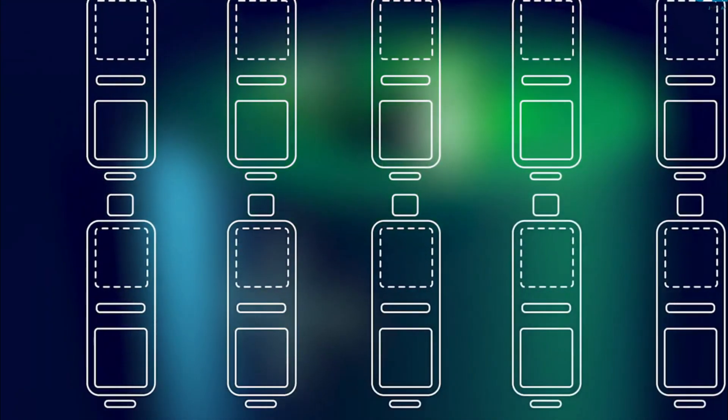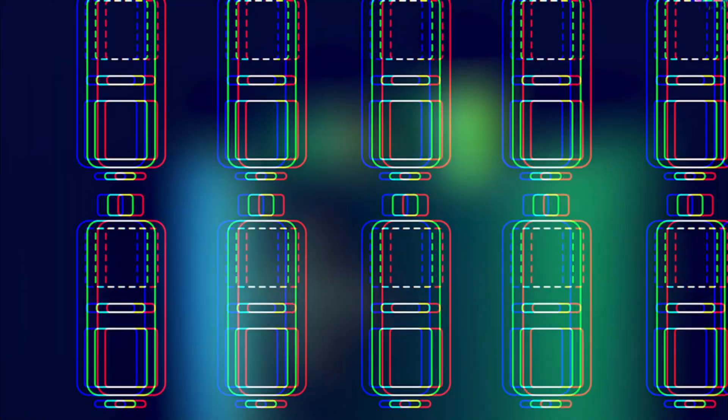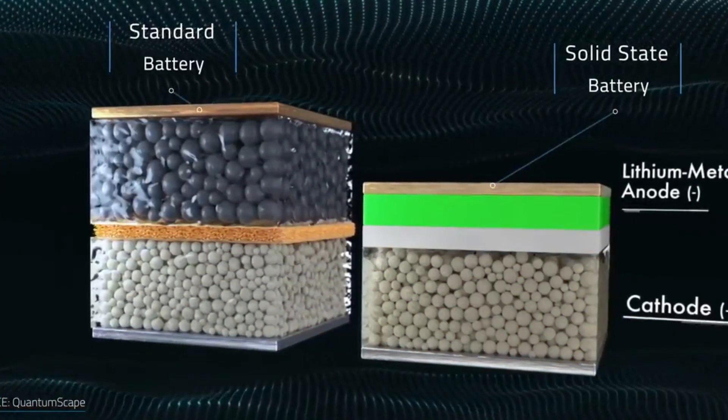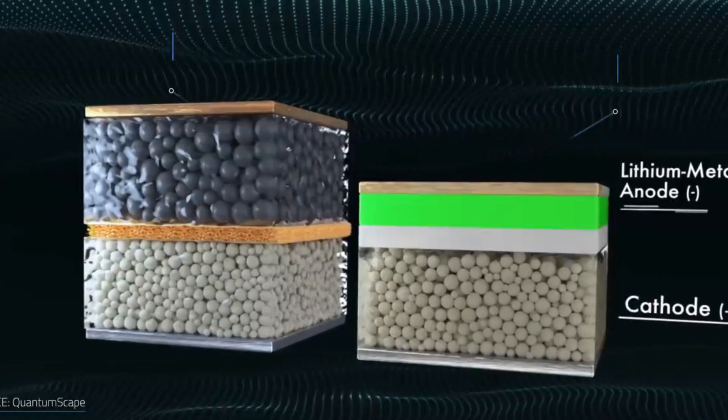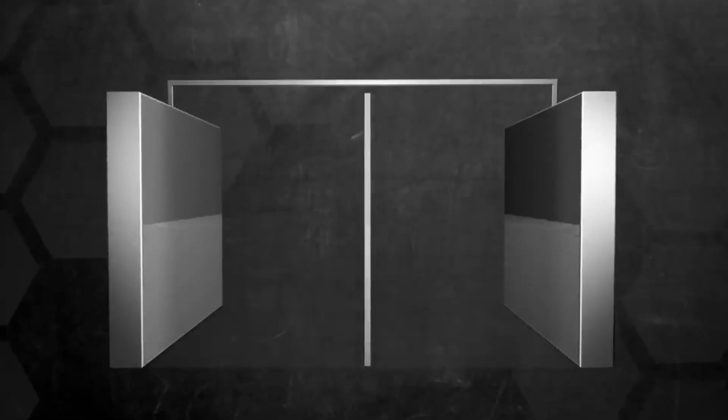Because only a few batteries are required, a solid-state battery can increase energy density per unit area. As a result, a solid-state battery is perfect for producing an EV battery system module and pack that demands a high capacity.